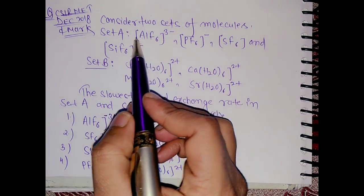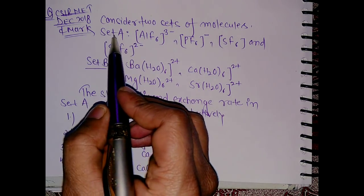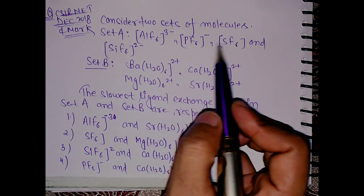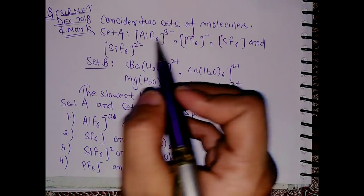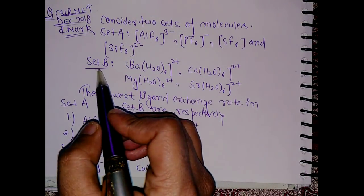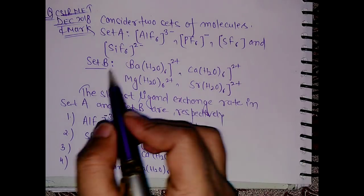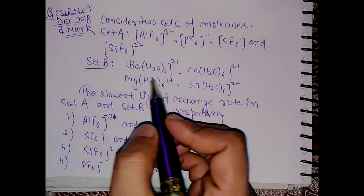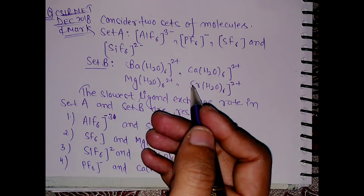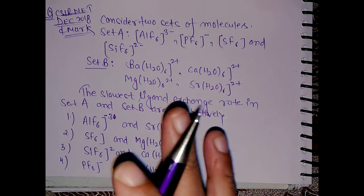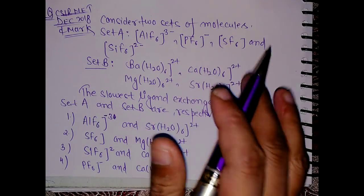In the question the examiner has given 4 sets. This is given as Set A in which we have 4 compounds which are your main group compounds: aluminium, phosphorus, sulphur and silicon. In Set B this is from coordination chemistry, so you have been given magnesium, calcium, strontium and barium.